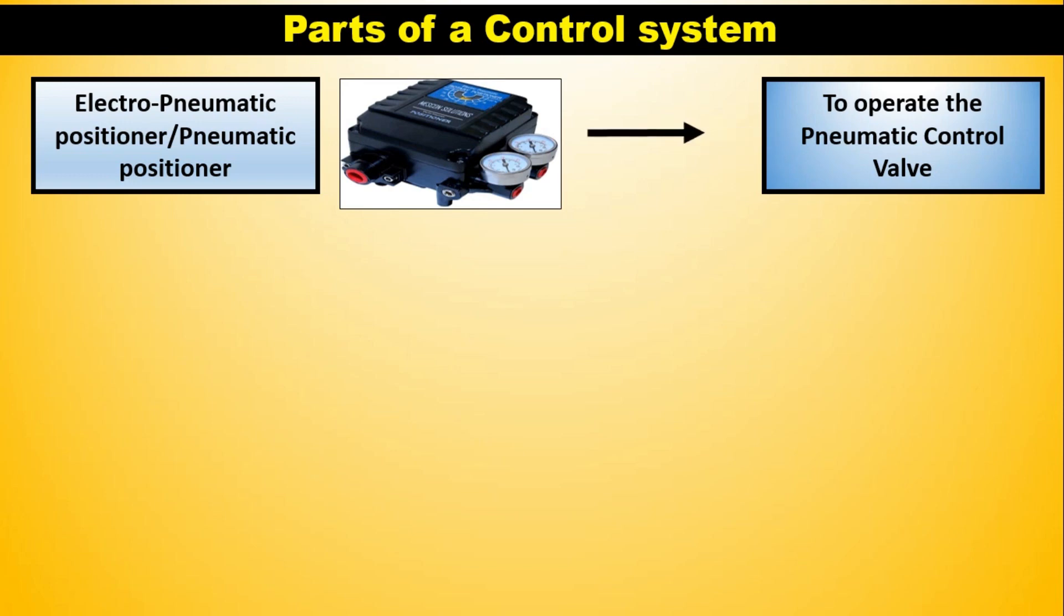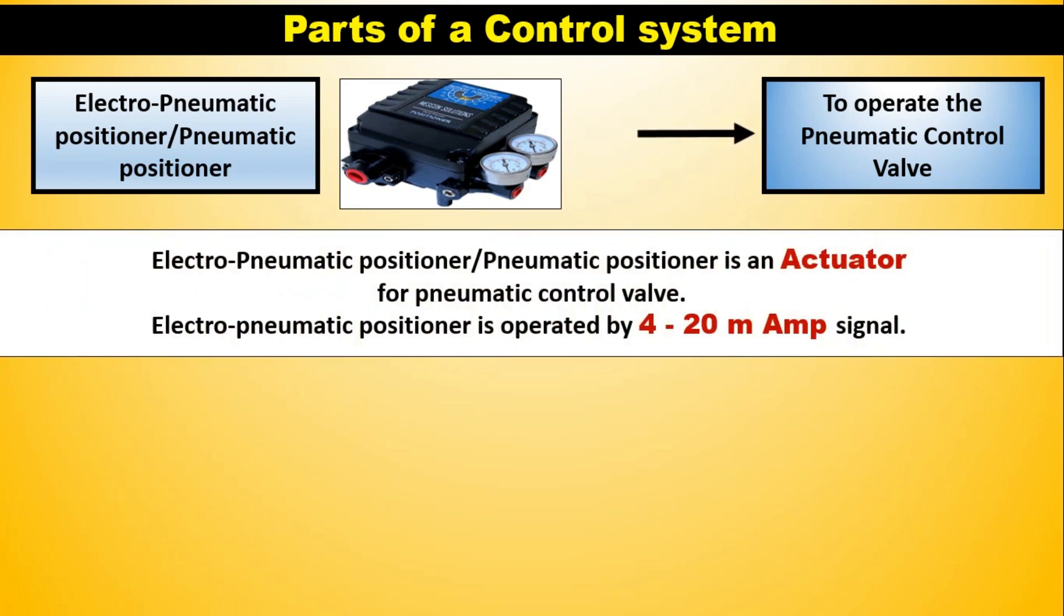Electro pneumatic positioner or pneumatic positioner. The function of electro pneumatic positioner or pneumatic positioner is to operate the pneumatic control valve. Electro pneumatic positioner or pneumatic positioner is an actuator for pneumatic control valve. Electro pneumatic positioner is operated by 4 to 20 mA signal.